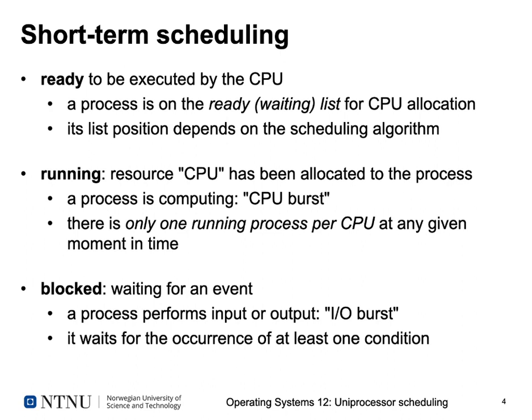In the blocked state, a process waits for an event because it has requested an I/O operation from the operating system. I/O operations tend to take longer — we call this an I/O burst, which keeps the hardware and potentially the operating system busy. While this I/O burst is currently running, our process cannot continue running because it has to synchronously wait for the completion of I/O. A process in a blocked state waits for the occurrence of at least one condition, for example, a signal that the I/O burst has terminated.